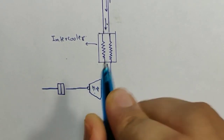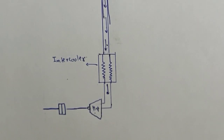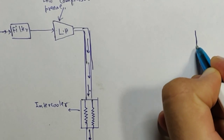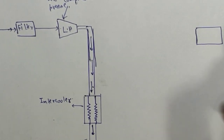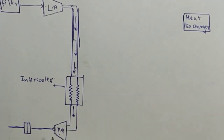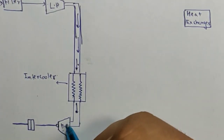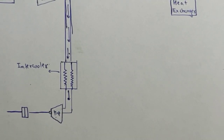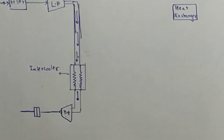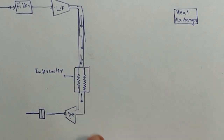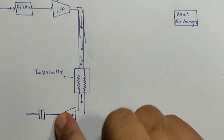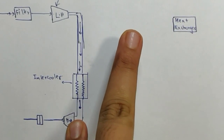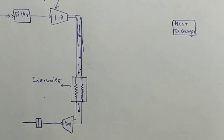After the gas has entered the high pressure compressor it is fully compressed. Then we have a heat exchanger. After the gas has been fully compressed it is sent to the heat exchanger. I have drawn the heat exchanger here so the diagram can be more clear — just visualize there is a pipe connecting the high pressure compressor to the heat exchanger.